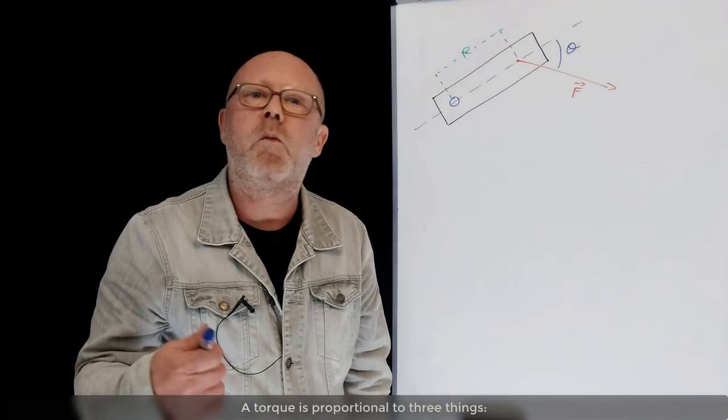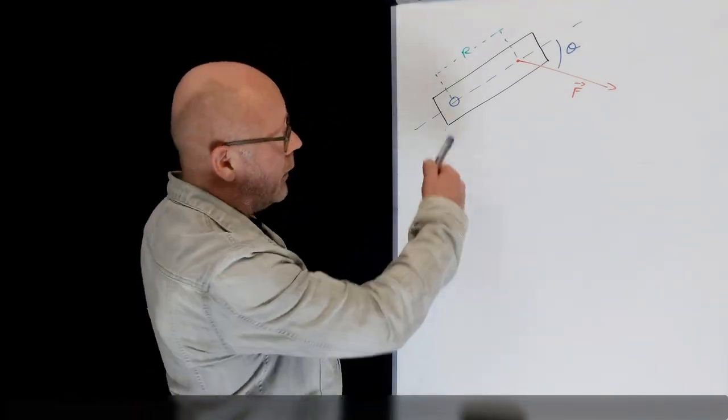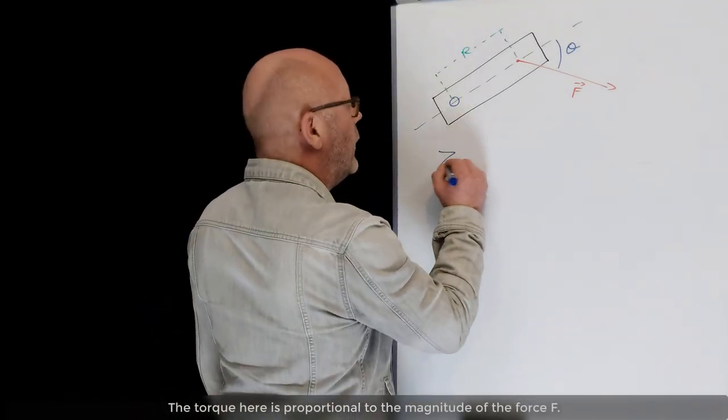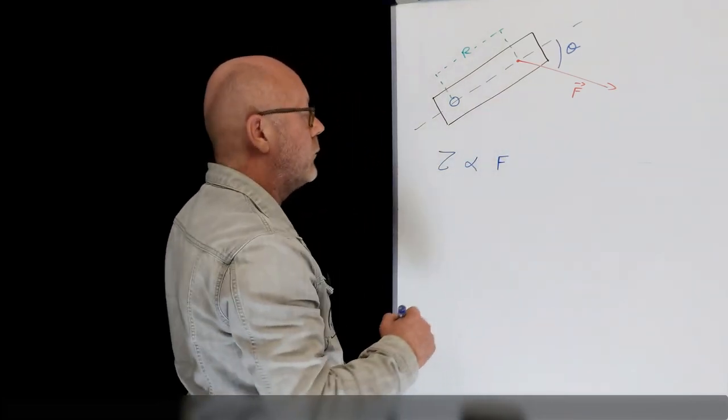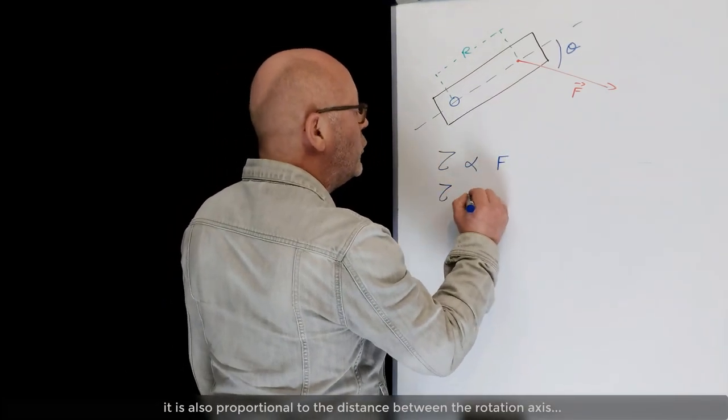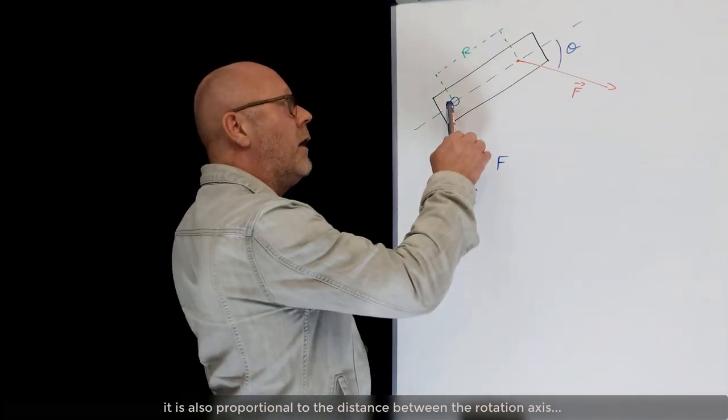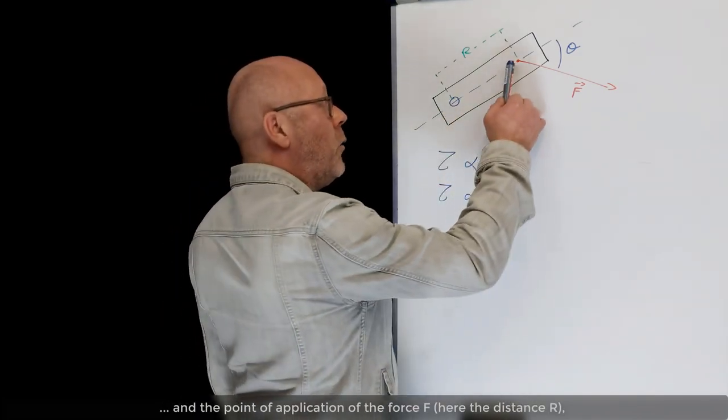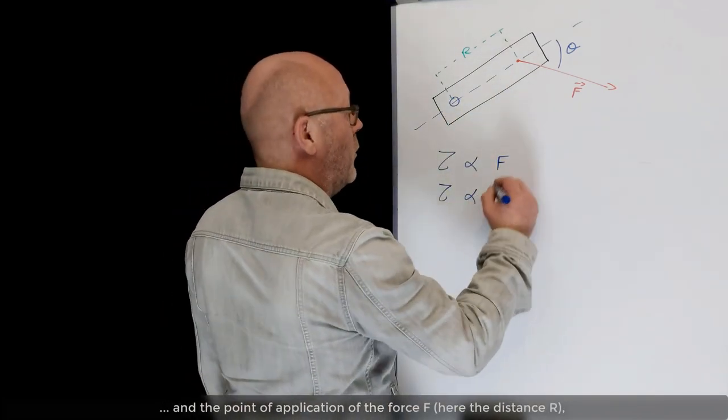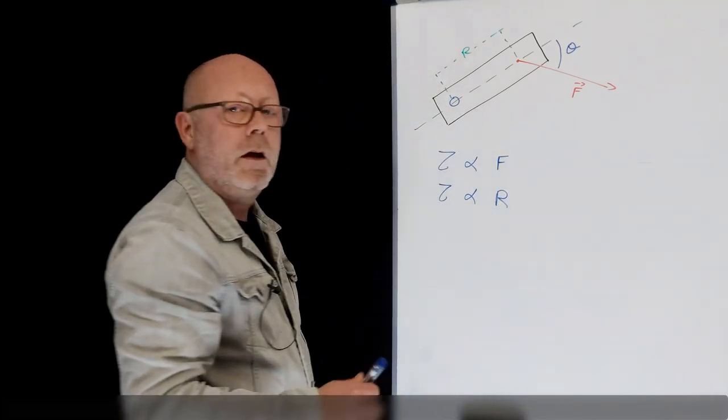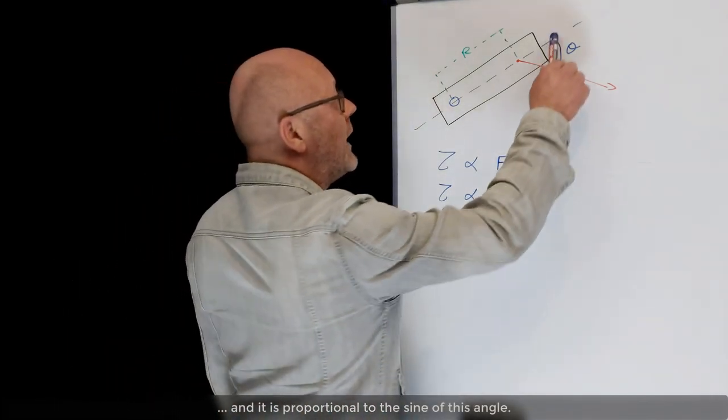A torque is proportional to three things. The torque is proportional to the magnitude of the force F. It is also proportional to the distance between the rotation axis and the point of application of the force F, so the distance R. And it is proportional to the sine of this angle.